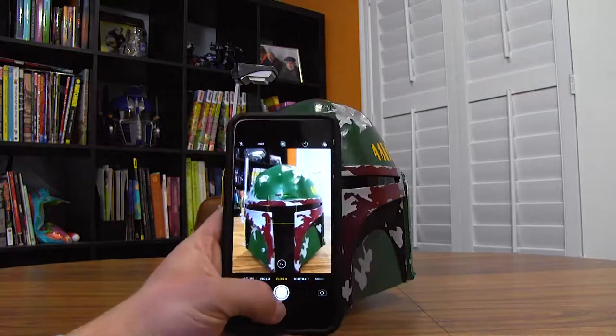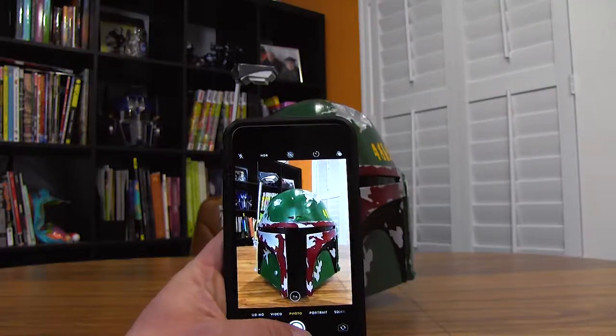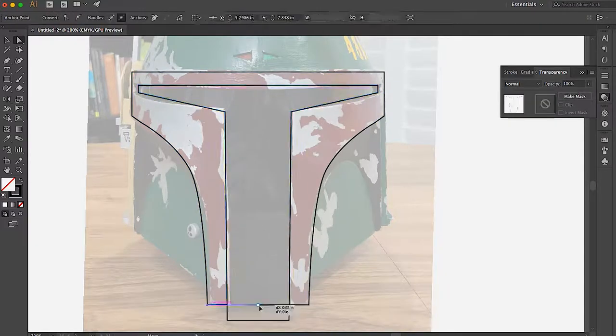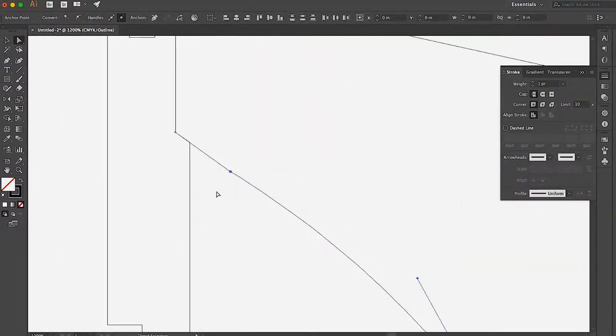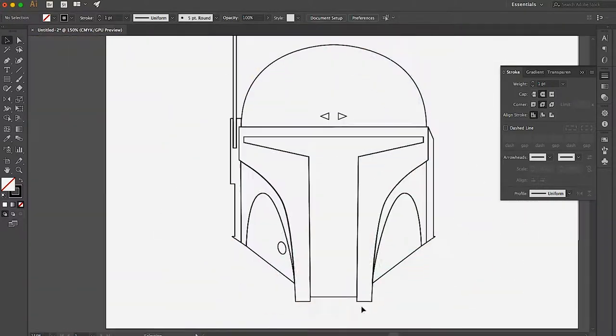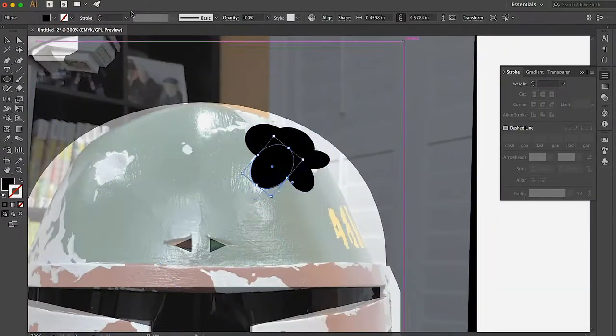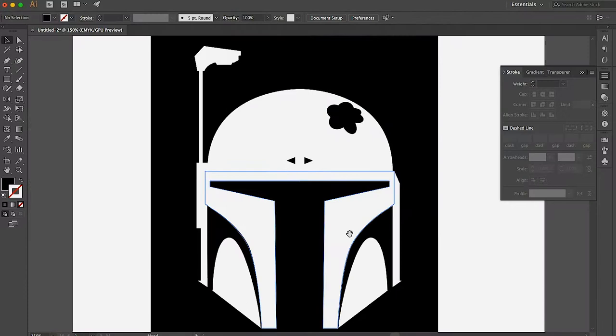First thing I did was take a reference picture of George's helmet to use. The photo got taken into Adobe Illustrator, and I turned most of the distinguishing characteristics into lines. I combined those lines in different ways until ending up with the simplest shapes that would resemble a Boba Fett helmet. This part was a lot of fun.